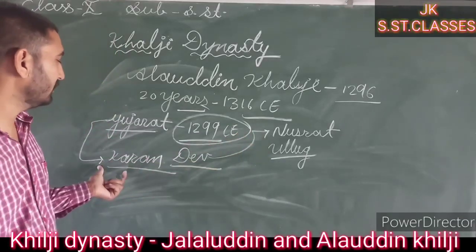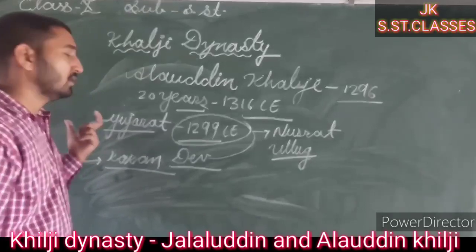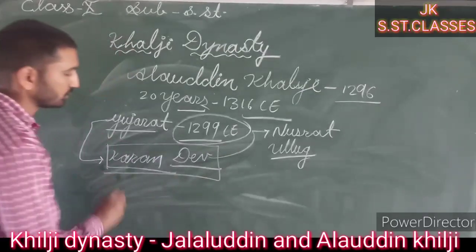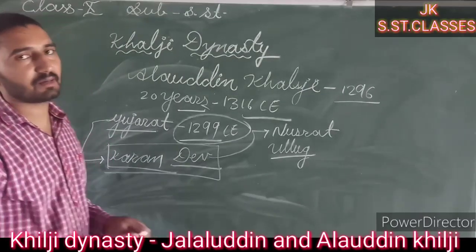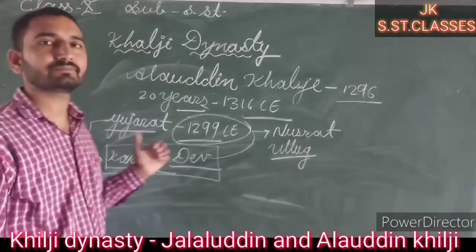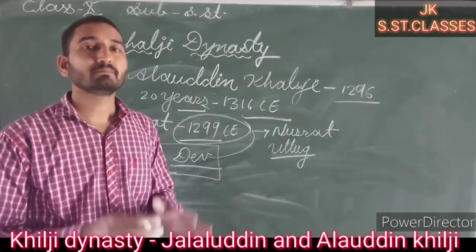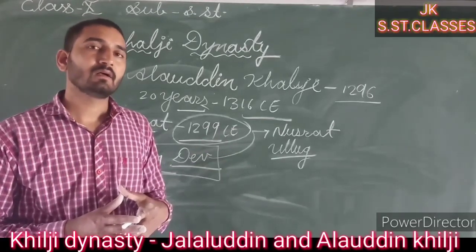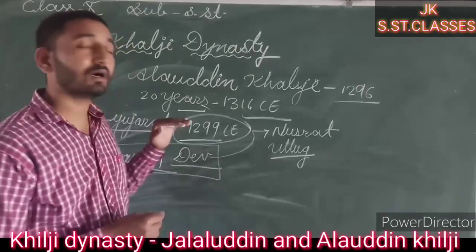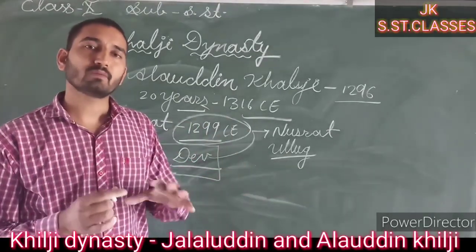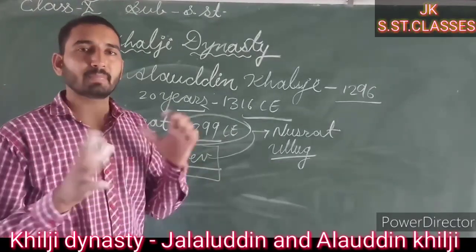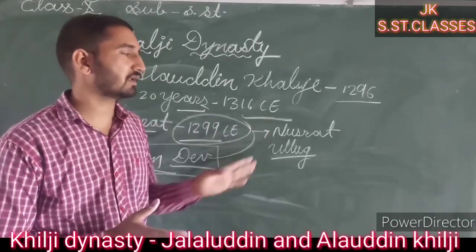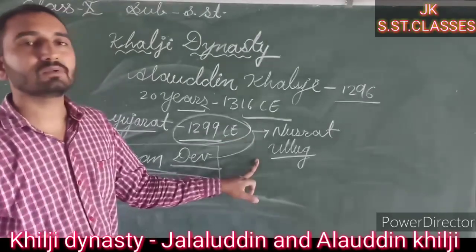Ulugh Khan and Nusrat Khan were both military commanders of the army sent to occupy Gujarat. In this war, Rajput ruler Karnadev was defeated. After that, Alauddin Khalji got a great amount of loot from Gujarat, from its capital Anhilwara. Anhilwara, the capital of Karnadev, was plundered by the army of Alauddin Khalji under the leadership of Nusrat Khan and Ulugh Khan. This army also looted the Somnath Temple.